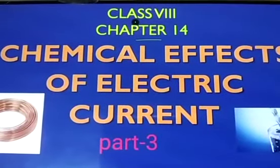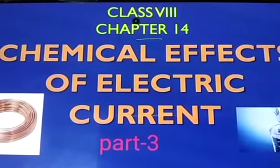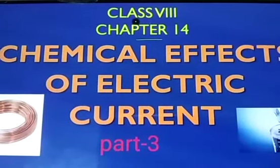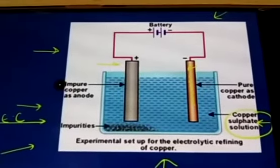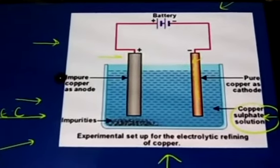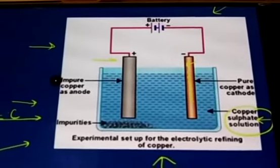I welcome you all for class 8 subject science. Today we are going to continue with our topic, that is chemical effects of electric current. Now here we are going to learn about electroplating. What is the meaning and how it is being done?